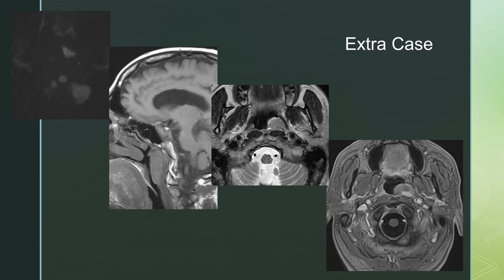An extra case: this lesion was seen incidentally on a brain MRI. There is a polypoid mass in the nasopharynx that is isointense on T1. On T2, it's slightly hypointense but not super dark. There's minimal enhancement — maybe a little peripheral — but it does show restricted diffusion on DWI. This is actually a nasopharyngeal lymphoma.